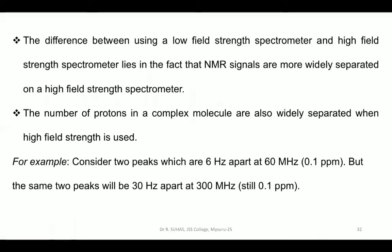So what is the difference between using low-field and high-field strength spectrometers? It is mainly for zooming purposes. NMR signals are widely separated on a high-field strength spectrometer. For example, two peaks 6 Hz apart on a 600 MHz instrument is only 0.1 PPM, but the same two peaks will be 30 Hz apart on a 300 MHz instrument — yet the chemical shift value remains 0.1 PPM. The separation of peaks is much greater with high field strength, making it easier to elucidate the structure of complex molecules.